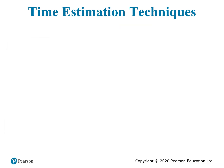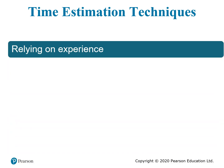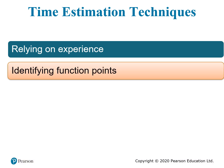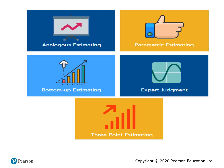Now let's look at time estimation techniques. The accuracy and quality of time estimation rely on the experience of the project team and manager. We also need to identify function points in each time estimate. There are five common techniques to estimate time: analogies estimating, parametric estimating, bottom-up estimating, expert judgment, and three-point estimating.